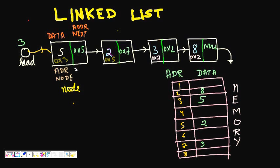Node 1 also stores the address of the next memory location. So node 1 with data 5 stores the memory location of node 2, which has data 2 and memory location 0x5. Similarly, node 2 stores the memory location of node 3, which has data 3 and memory location 0x7. Node 3's next address points to node 4, which is stored at memory location 2.